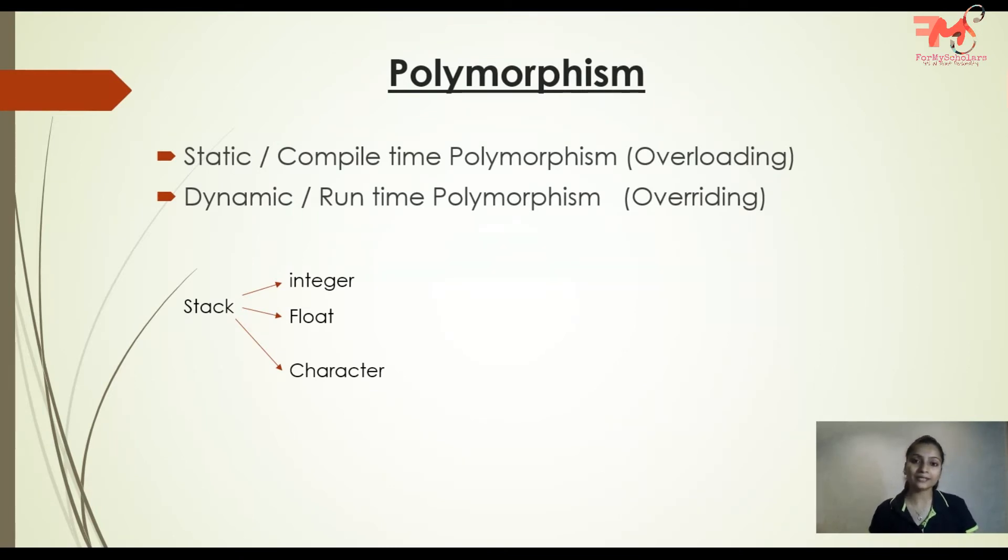So this property is known as polymorphism. Basically there are two types of polymorphism: overloading and overriding. In overloading, you have a single class and then you can have multiple methods with the same name but the parameters passed would be different, and their implementation can also be different. This is called overloading. What happens in overriding case?